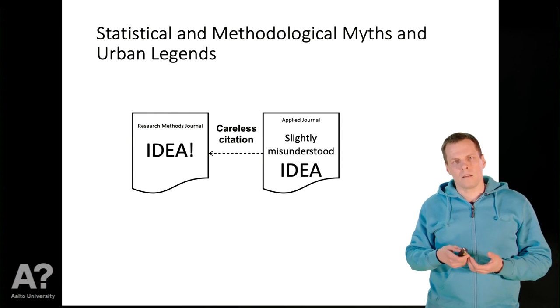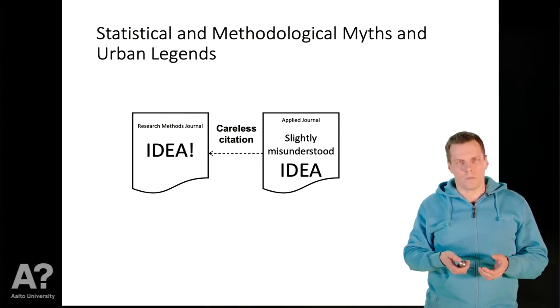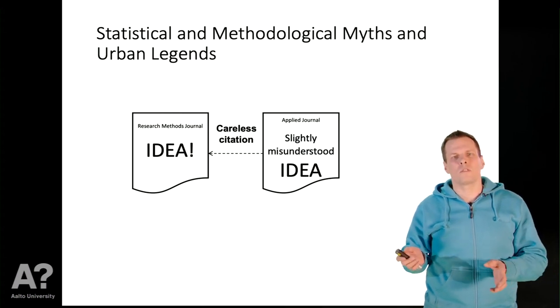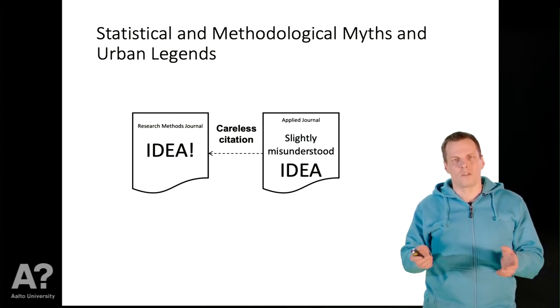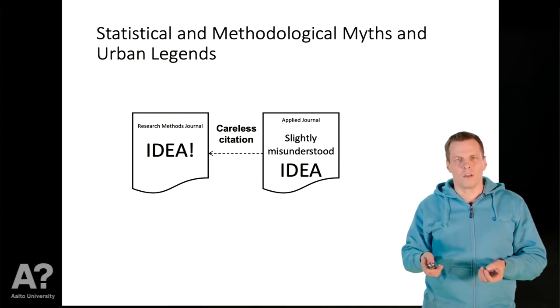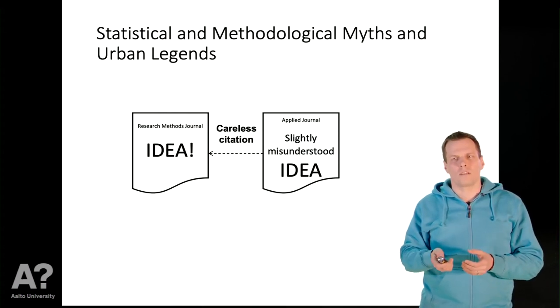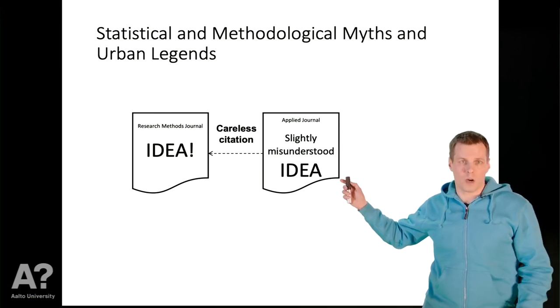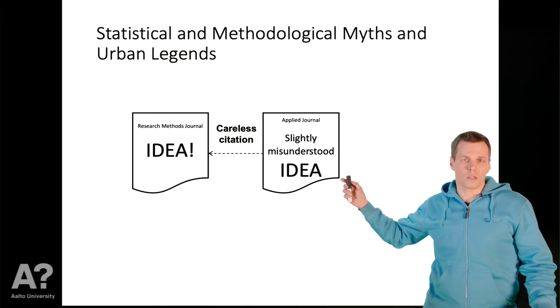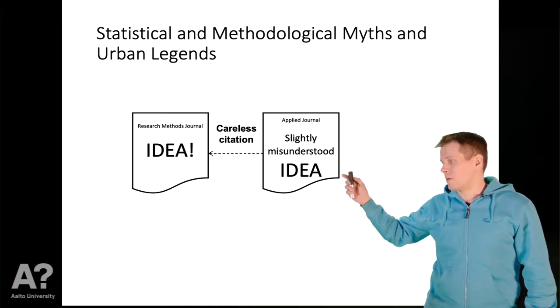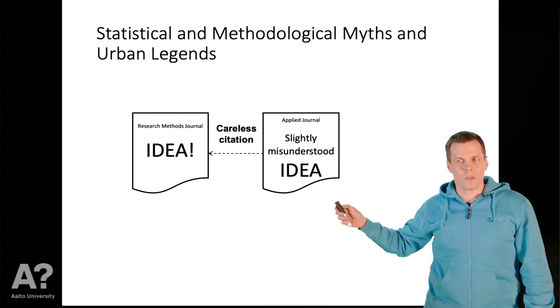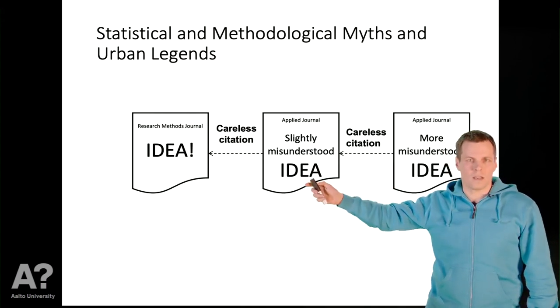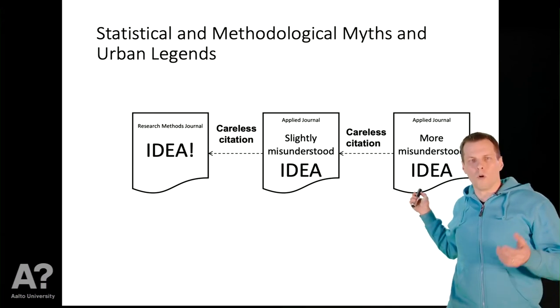So what will happen then when a next person in that journal wants to apply the same technique? Do they go to the methods journal, try to understand the equations and proofs and simulation results, or do they just look at the justification that this empirical paper gave for the technique and explanation of how and why it works? They will go to the empirical paper instead of looking at the methods paper and chances are that there's another careless citation to the idea and the idea becomes more misunderstood.